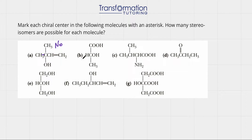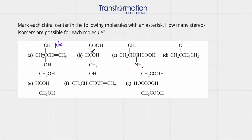Let's look at molecule B. This carbon has a hydrogen, an OH, a CH3, and COOH. This carbon is connected to four different groups: a hydrogen, an OH, a CH3, and COOH — which are all different. So this carbon is a chiral center, and we will go ahead and give it an asterisk.